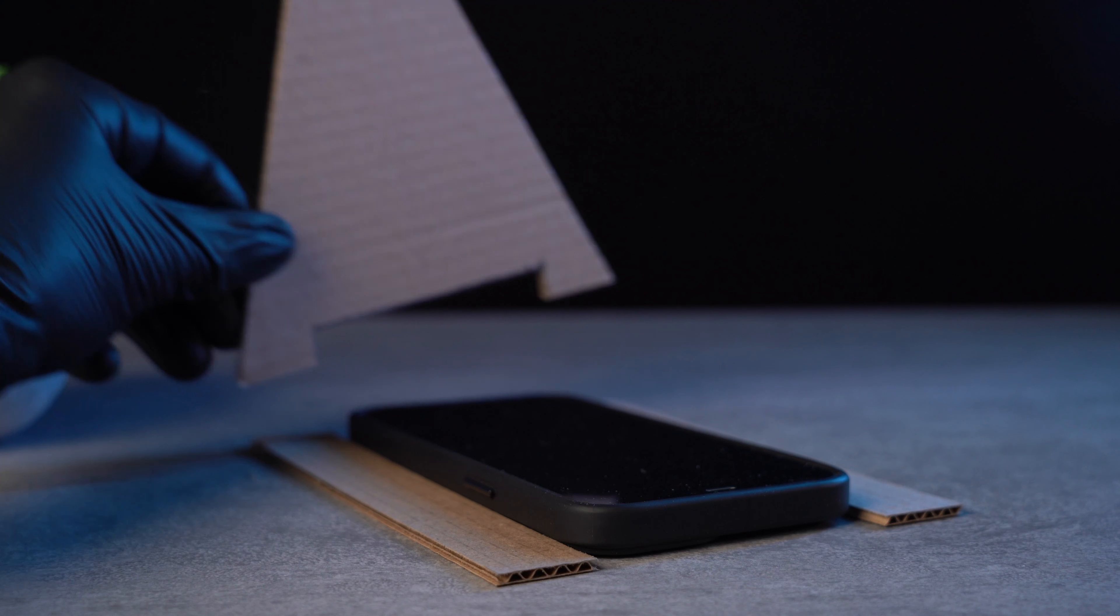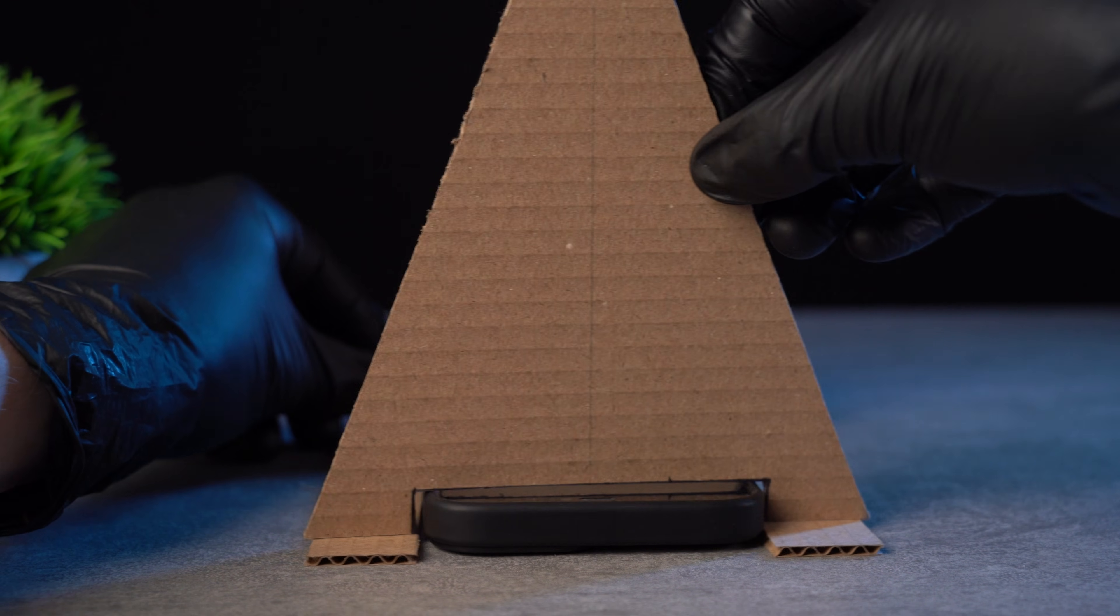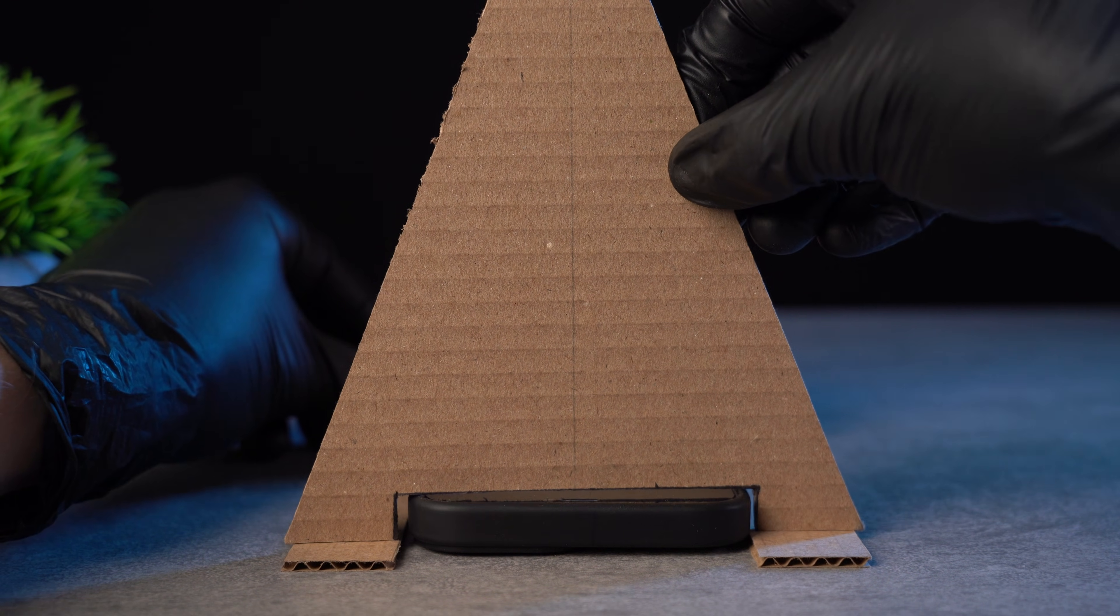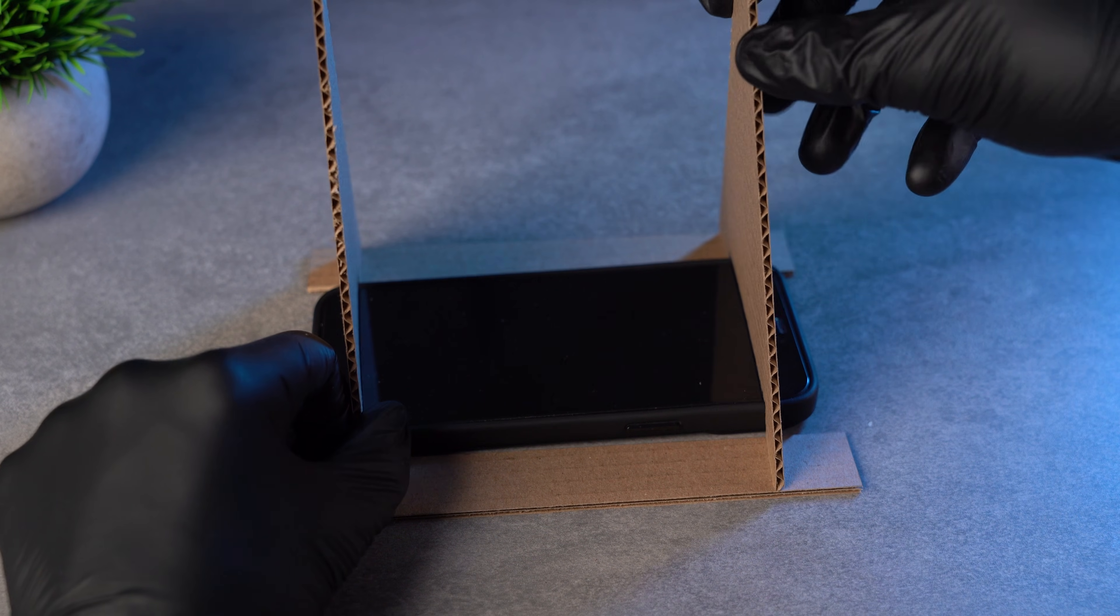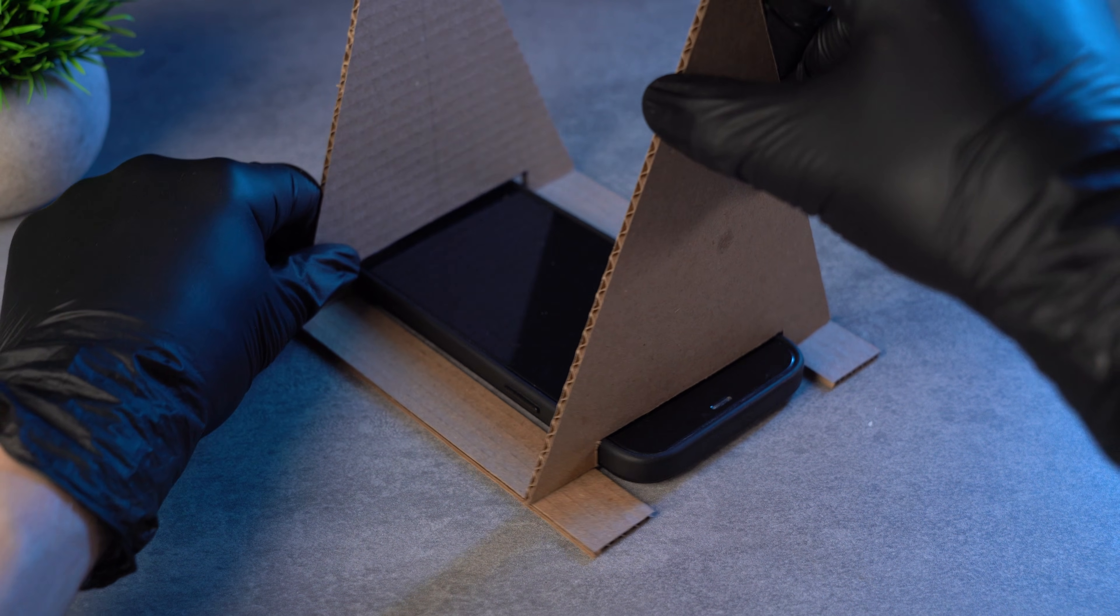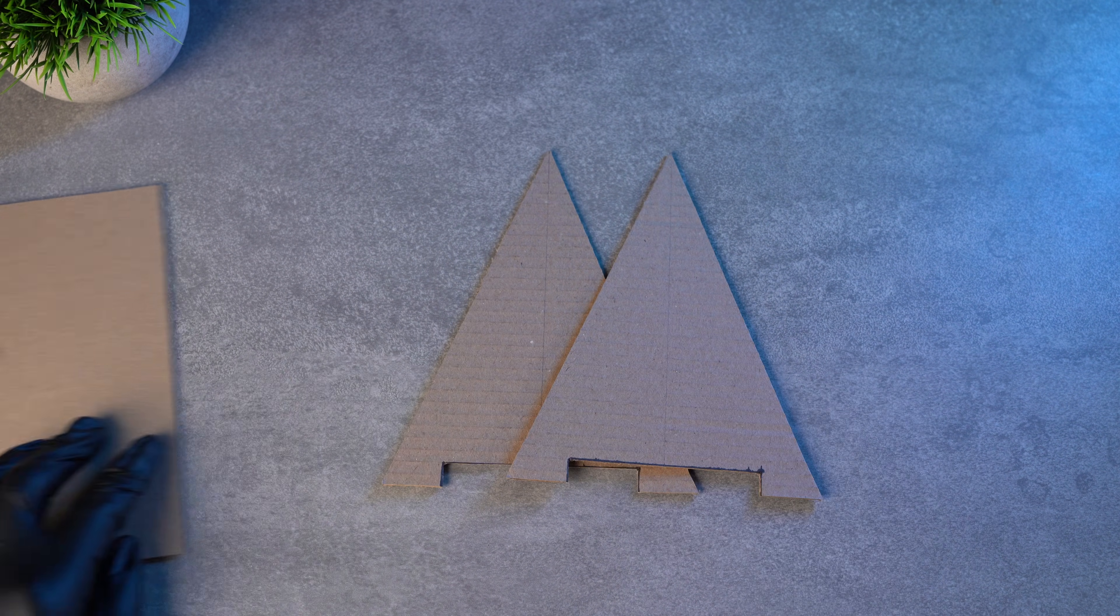Now we need two cardboard strips. The triangles will stand like this. So measure the width of the strips based on the legs of the triangles and the small bottom supports created by the phone cutout. For now, make the strips slightly longer than your phone. We'll trim them to the exact length later. So now we have two side pieces, a back piece, and two strips that will go on the bottom.